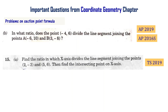Coordinate Geometry Chapter — problems on the Section Point Formula, which are important. In what ratio does the point minus 4 comma 6 divide the line segment joining point A, that is minus 6 comma 10, and B, that is 3 comma minus 8? This question is from the AP final exam of 2019 and the AP supplementary exam of 2016.